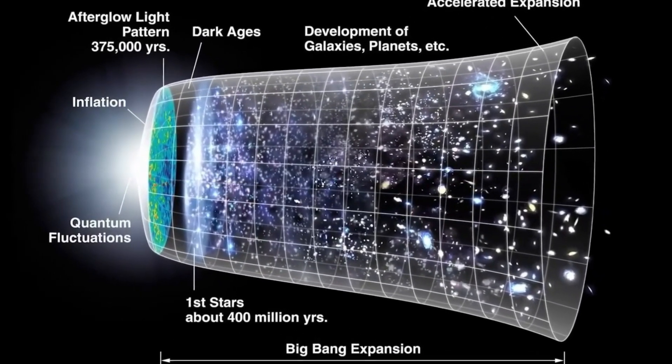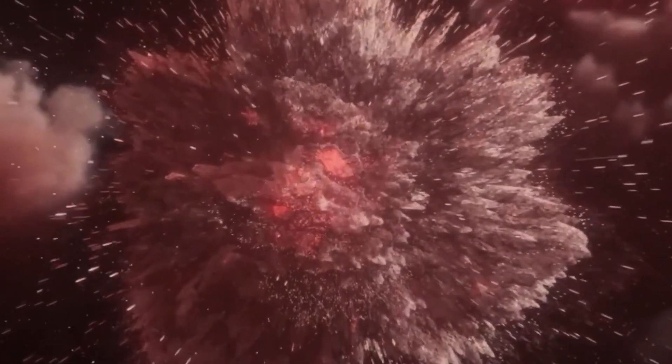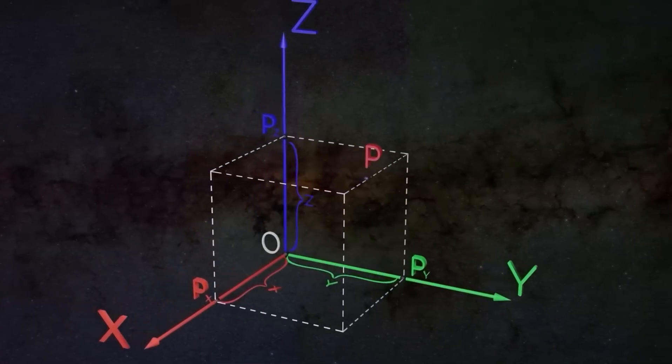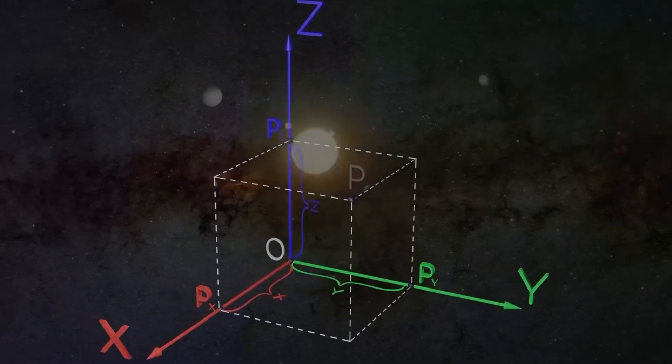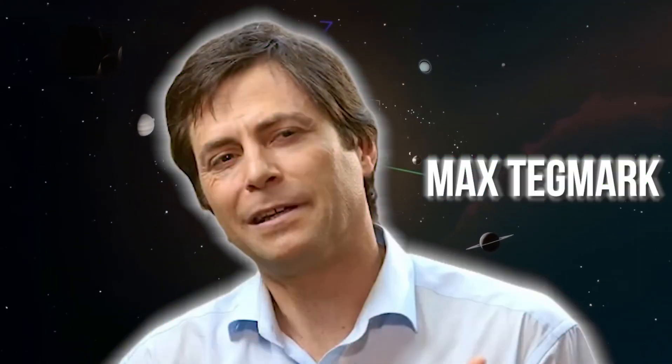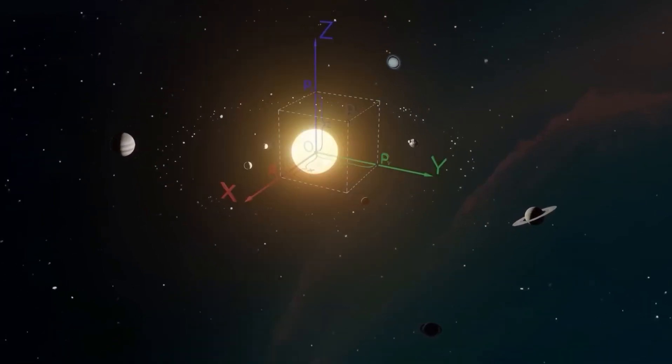However, string theory requires the existence of extra dimensions, which have yet to be observed experimentally. LQG, on the other hand, suggests that space-time is composed of discrete loops, providing a granular structure at the smallest scales.